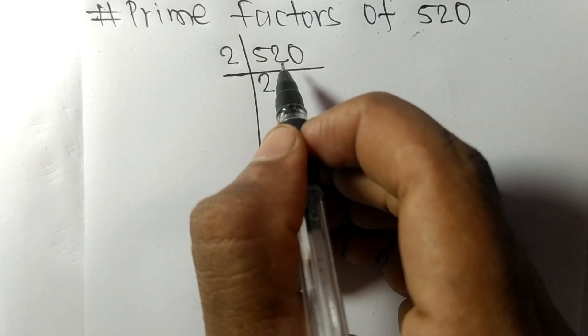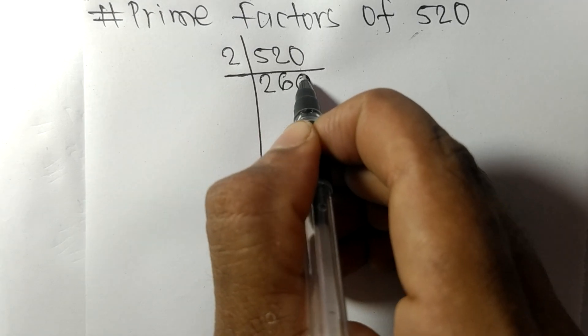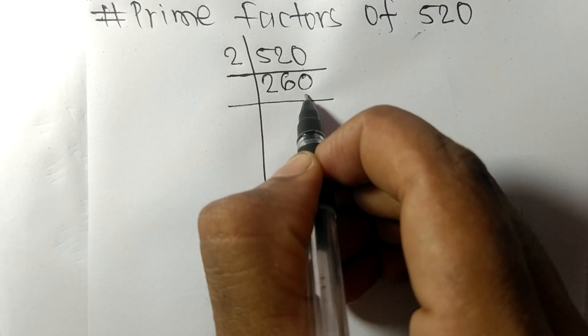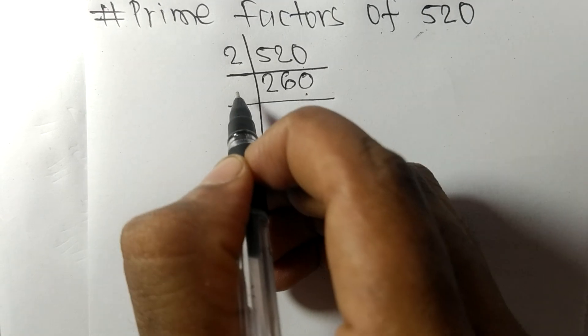Again it has zero at last so it is divisible by 2. 2 times 1 means 2, 2 times 3 means 6, 2 times 0 means 0.